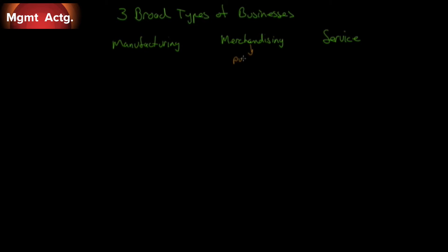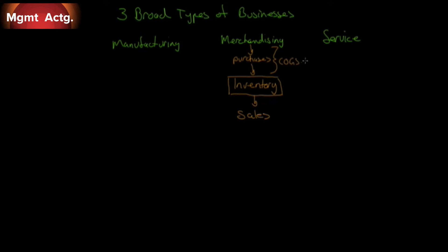Merchandisers purchase their inventory — we'll just categorize that as inventory. They purchase their inventory, put it on the shelves, customers come in, pick it up, go to the cash, and walk out. That is how sales are generated. They're sometimes called box pushers. The purchases that they make get classified as cost of goods sold. So we have our revenues and sales and our cost of goods sold.